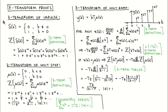For the proof of the Z-Transform of the impulse, we first write down the definition of the impulse and then directly apply the definition of the Z-Transform to it. The unshifted impulse is defined as 1 when k is equal to 0 and 0 everywhere else. According to the Z-Transform definition, the Z-Transform of an impulse is given by this infinite sum, which can be written as in this line.